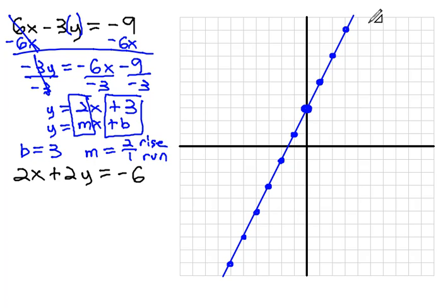And this is the graph of 6x minus 3y equals negative 9, a picture of all the solutions that work in the first equation. We are looking for the pair of numbers that works not only in the first equation, but also in the second equation. So let's take a look at that.